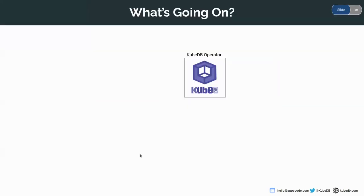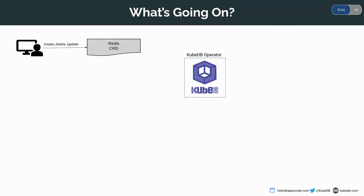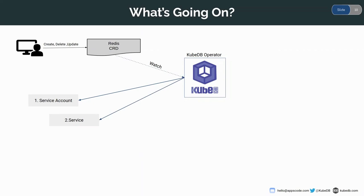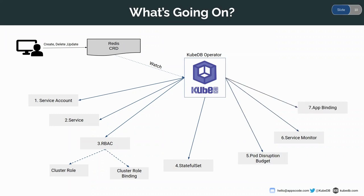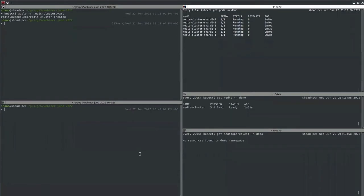Under the hood: as a user I created a Redis CRD using the YAML, which the KubeDB operator watches. The operator first creates a ServiceAccount and a Service for connecting to the database, then creates ClusterRole and ClusterRoleBinding, then StatefulSets containing the Redis image, PodDisruptionBudget, ServiceMonitor, and finally an AppBinding.